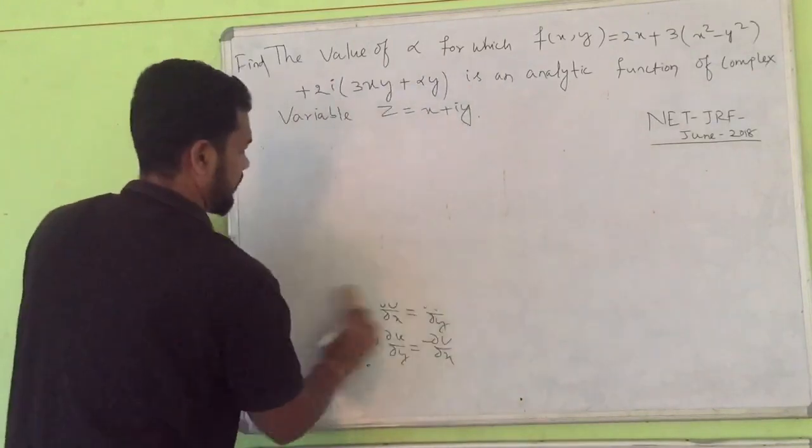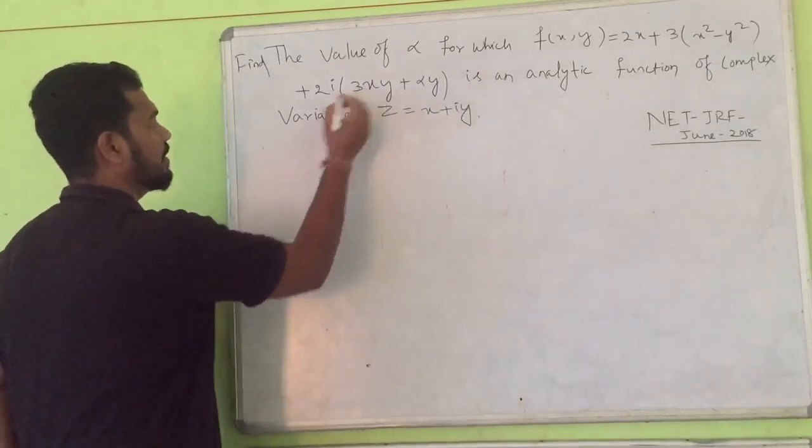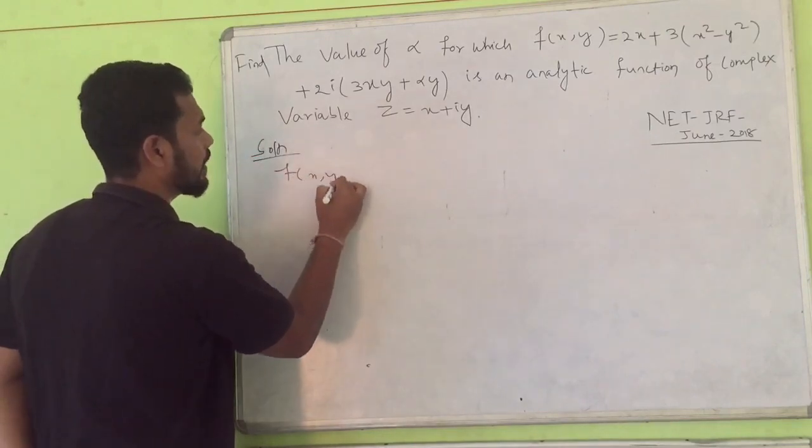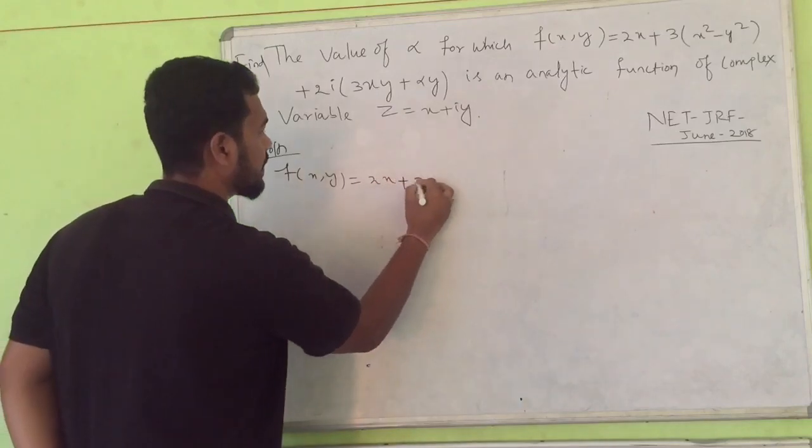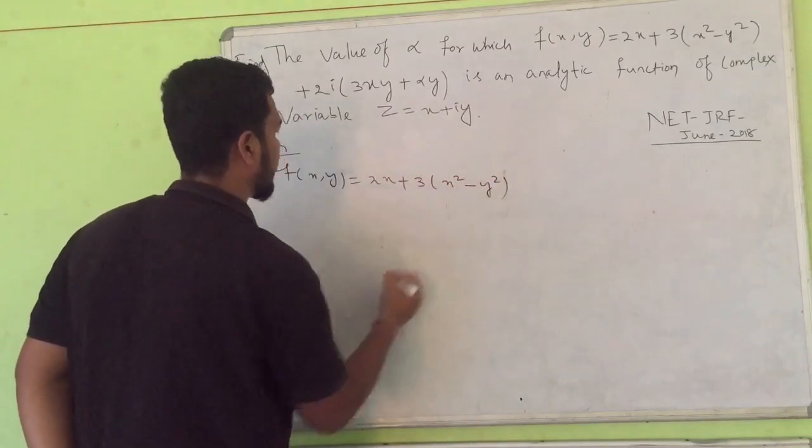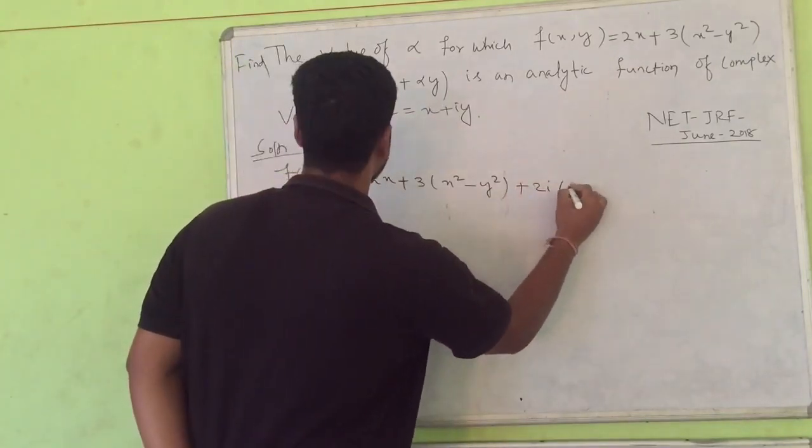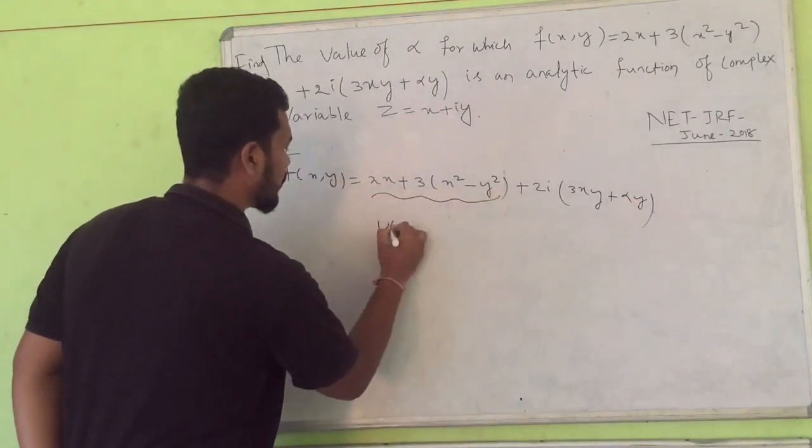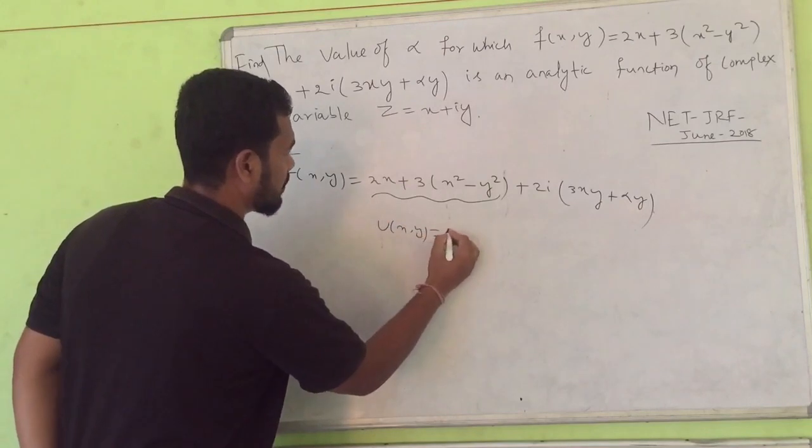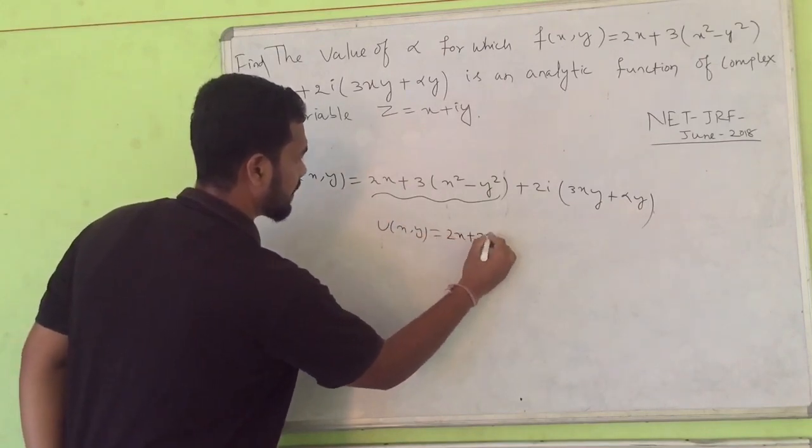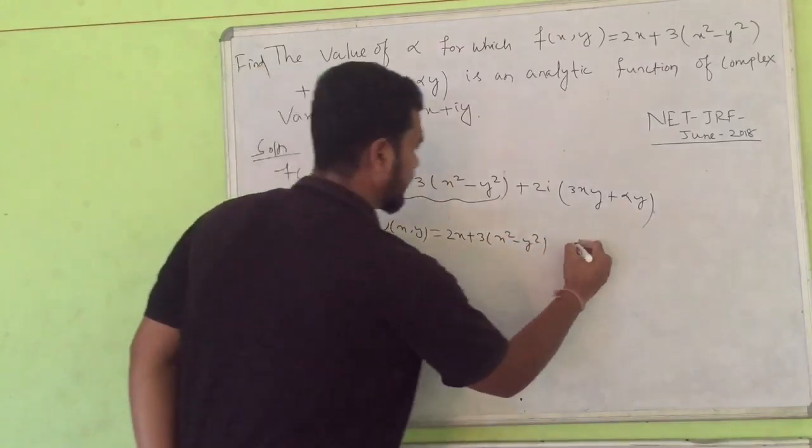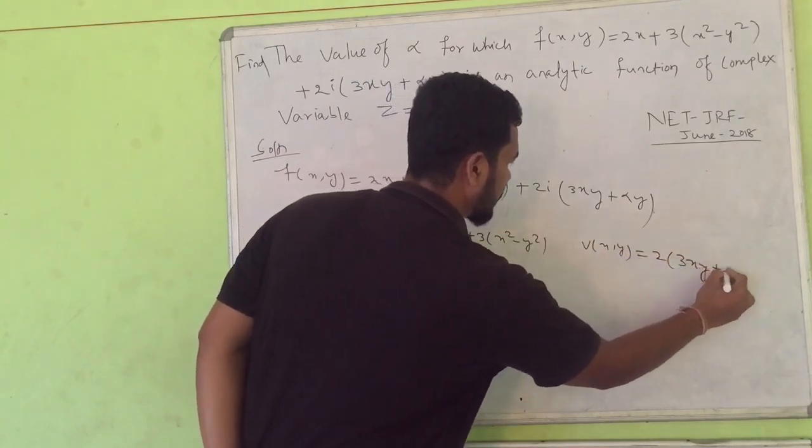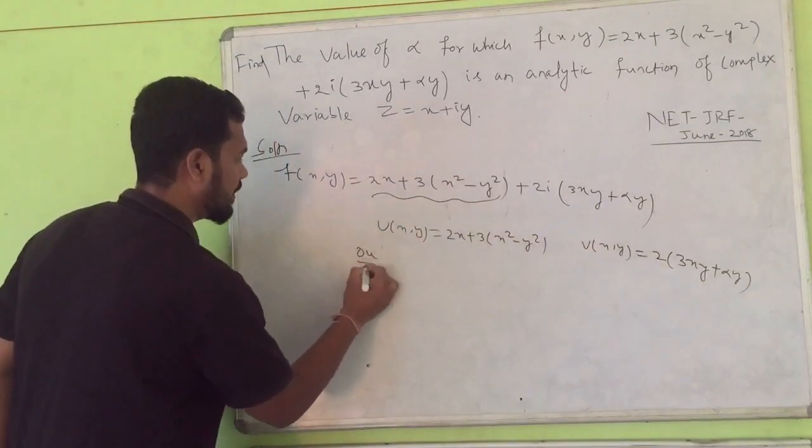Let's see how to find the value of alpha. Given function f(x,y) equals 2x plus 3x square minus y square plus 2y, 3xy plus alpha y. Here your u(x,y) is 2x plus 3x square minus y square and your v(x,y) equals 2, 3xy plus alpha y.